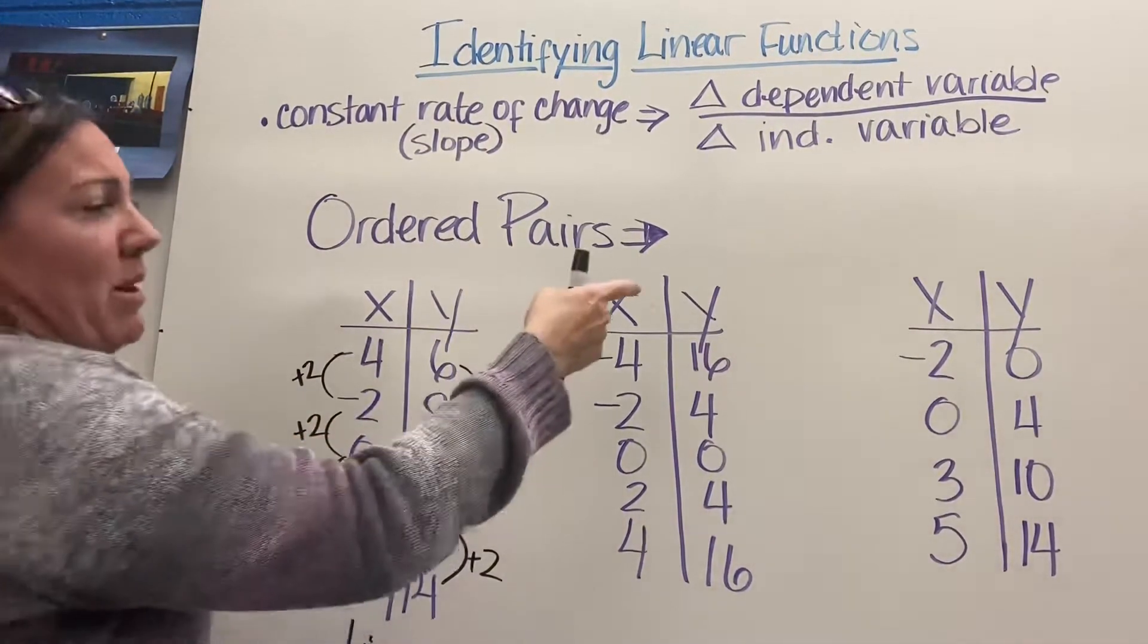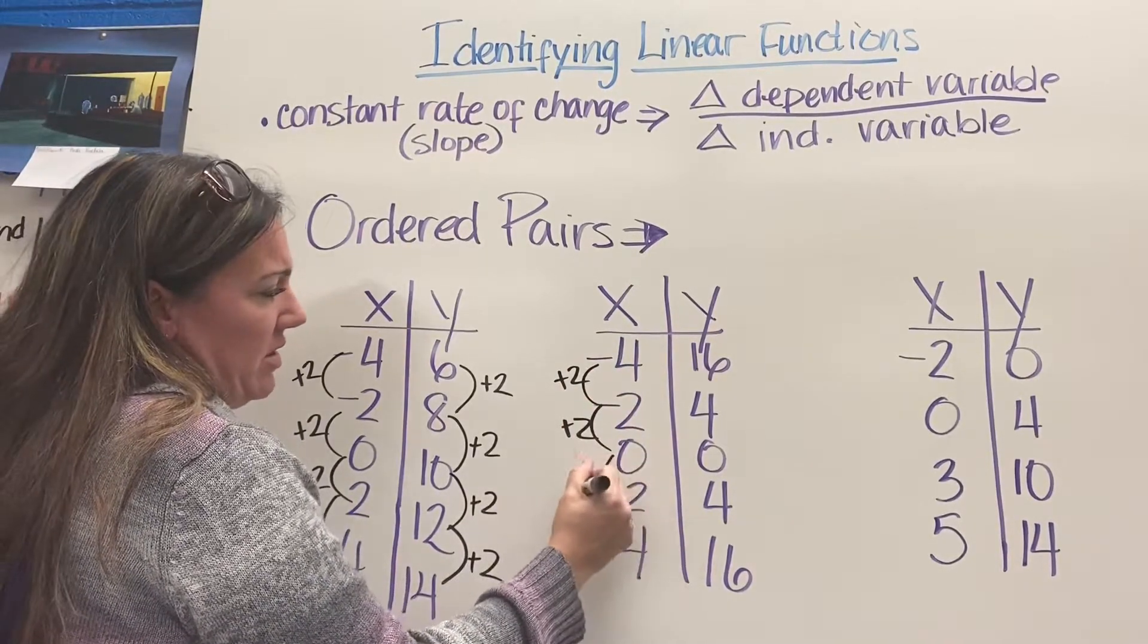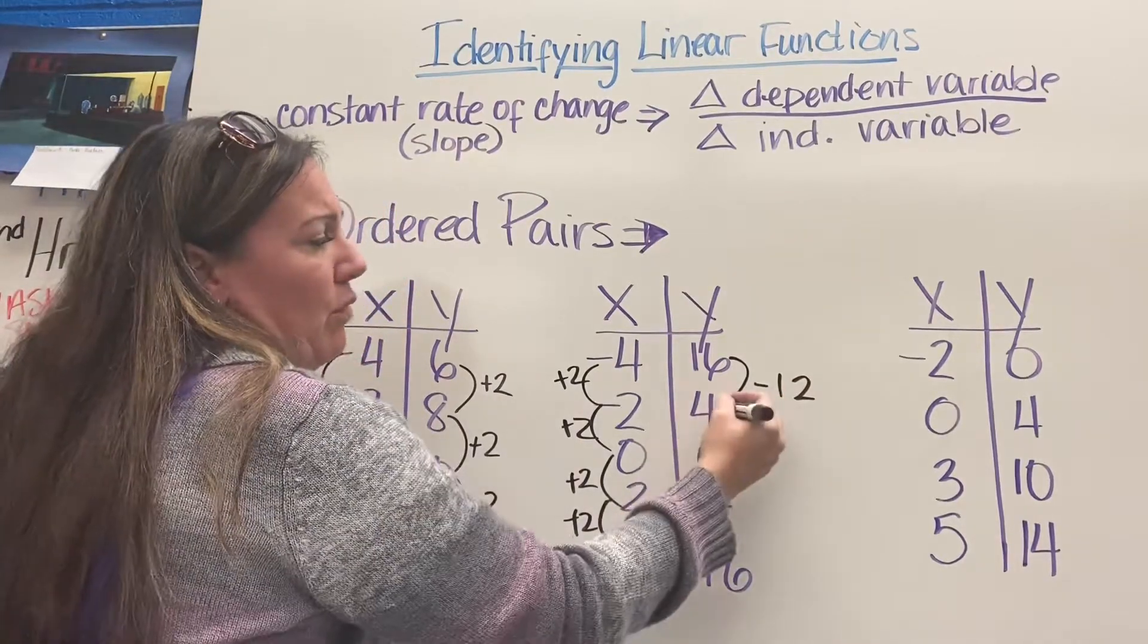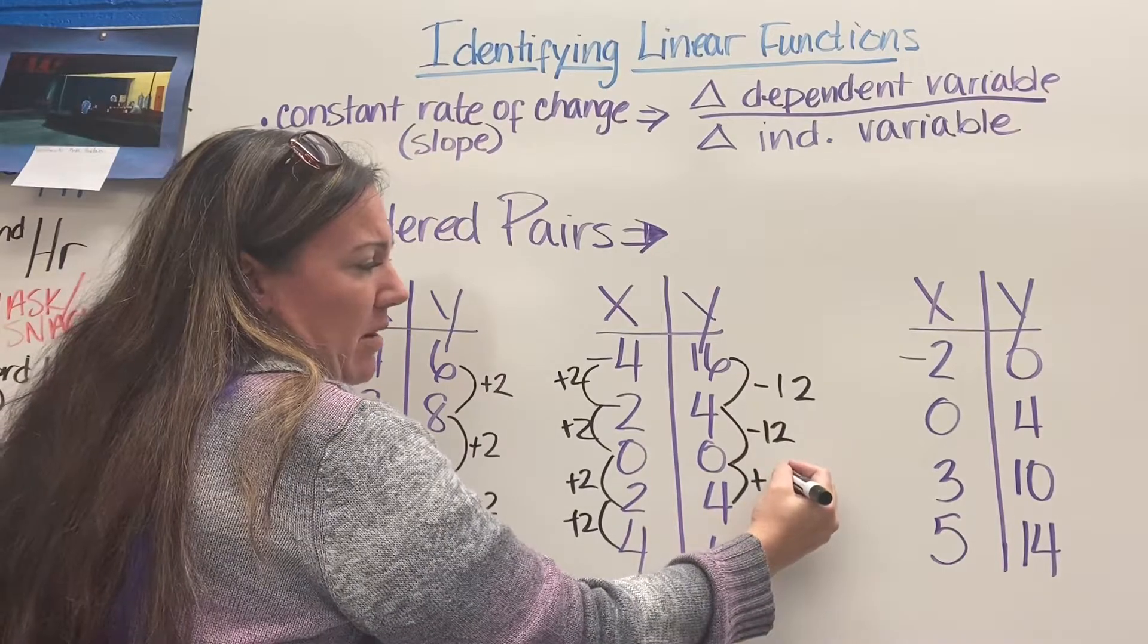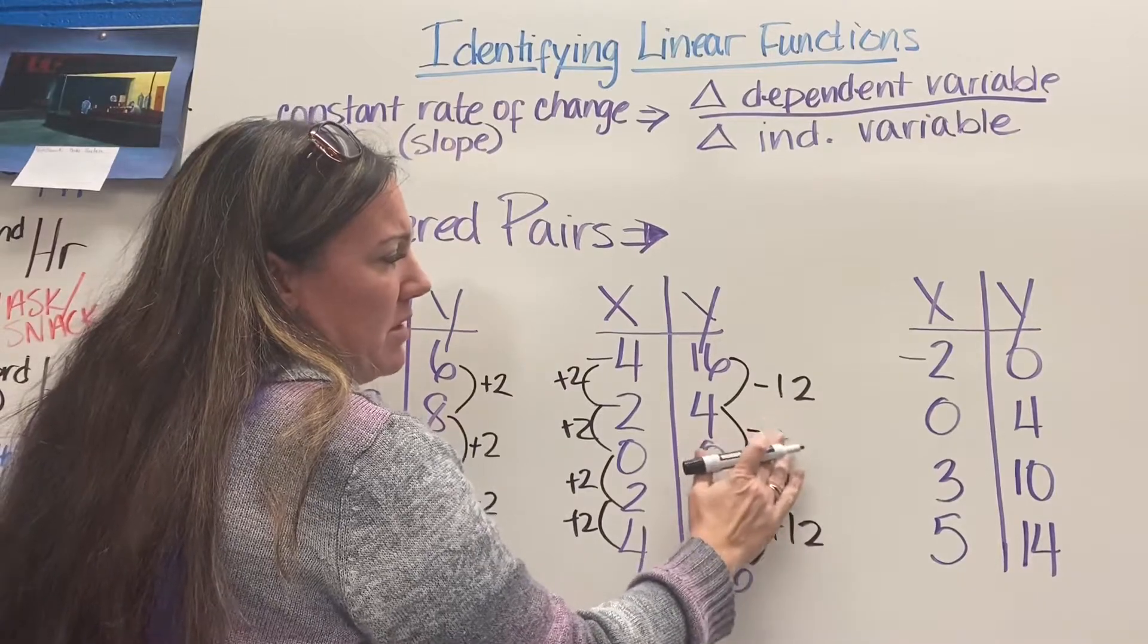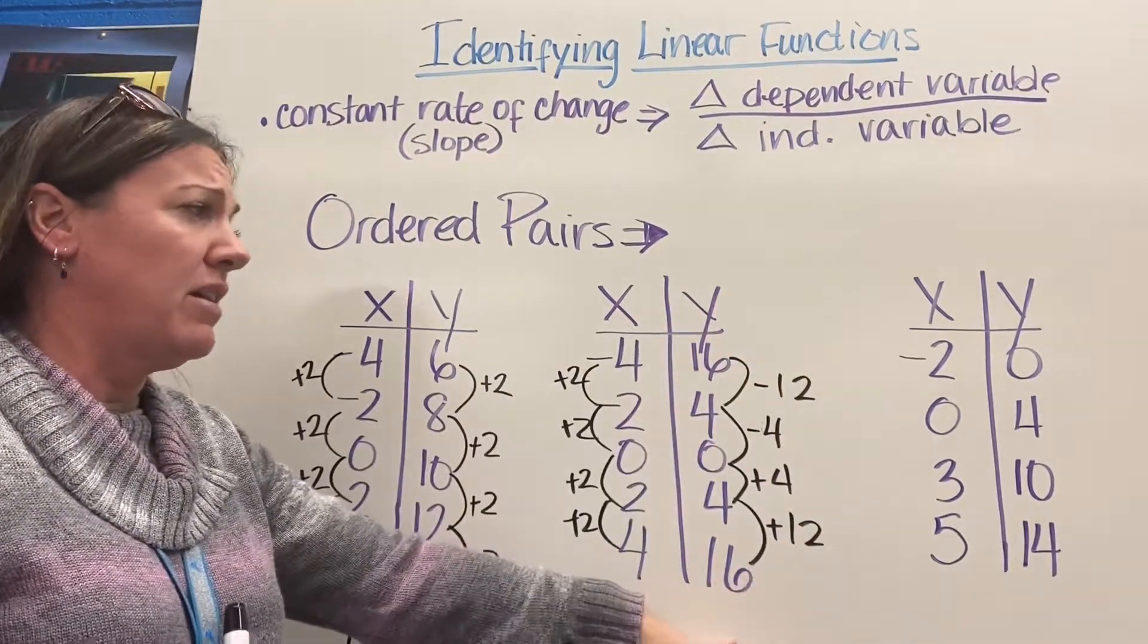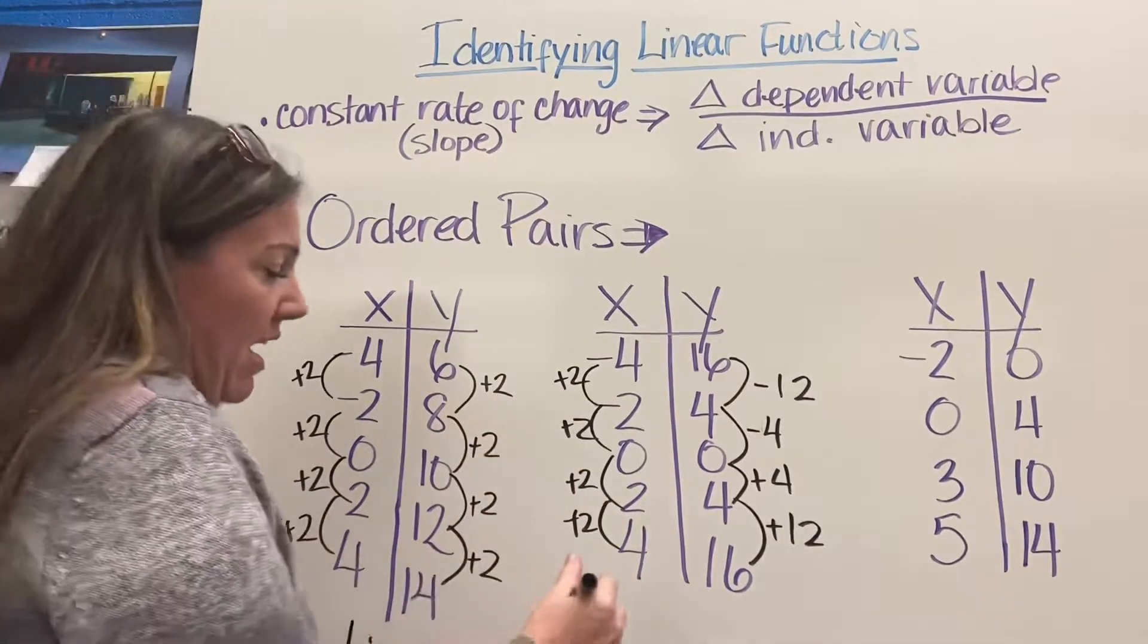If I look over at my middle one, my X values are going to go up by 2, just like they just did. Then I look at my Y values: to go from 16 to 4, I went down by 12; 4 to 0, down by 12; and then up by 4, and then up by 12. Oh whoops, this should be down by 4. Sorry. You can see that I don't have a constant rate of change in my Y values, even though my X values are continual. So this would be nonlinear.